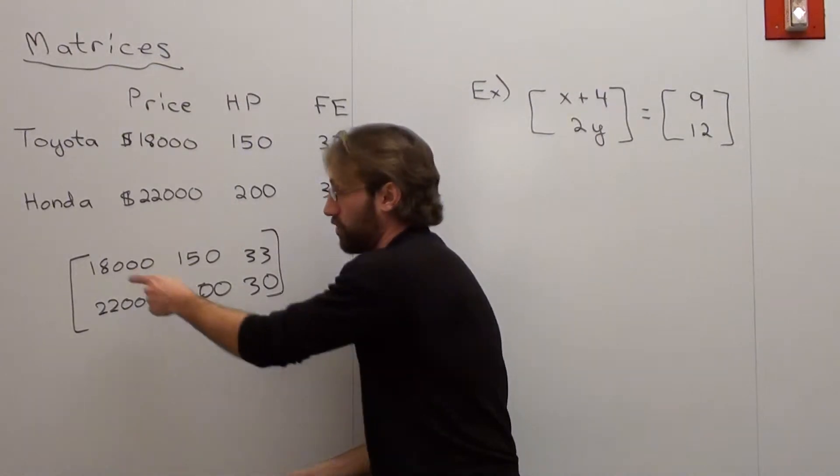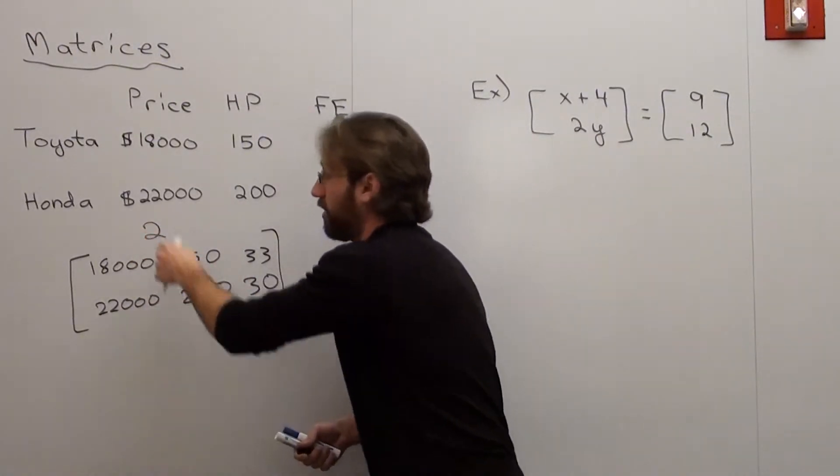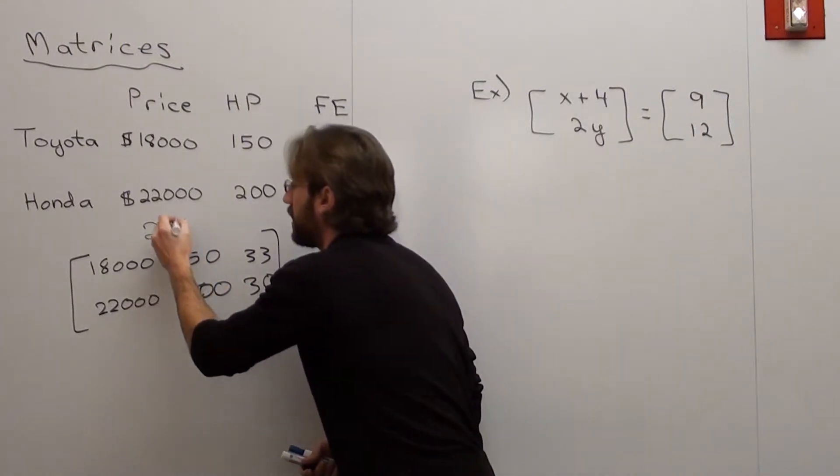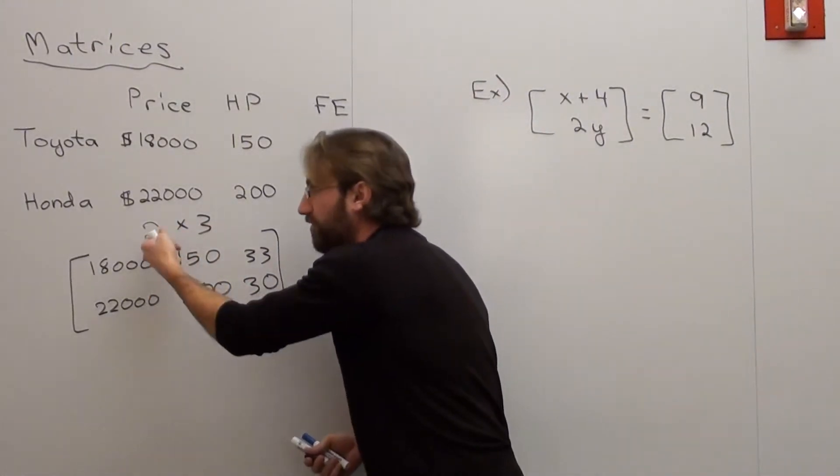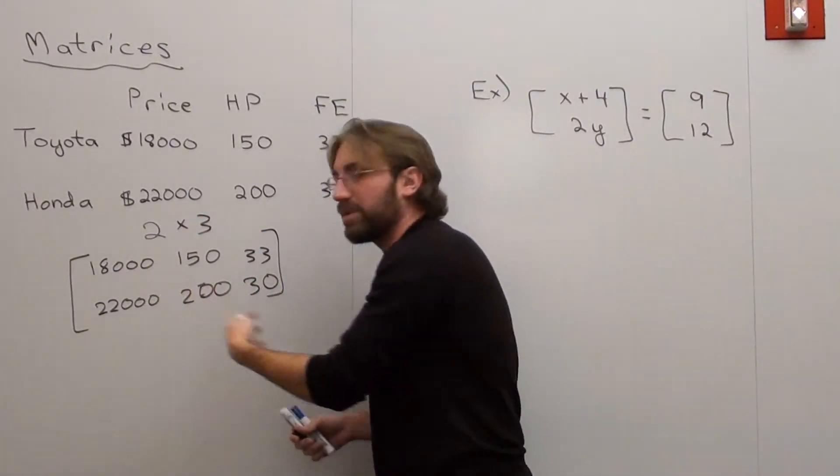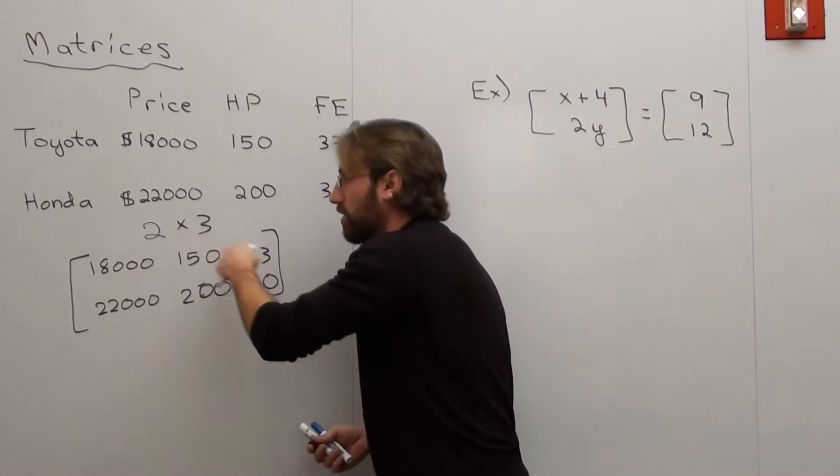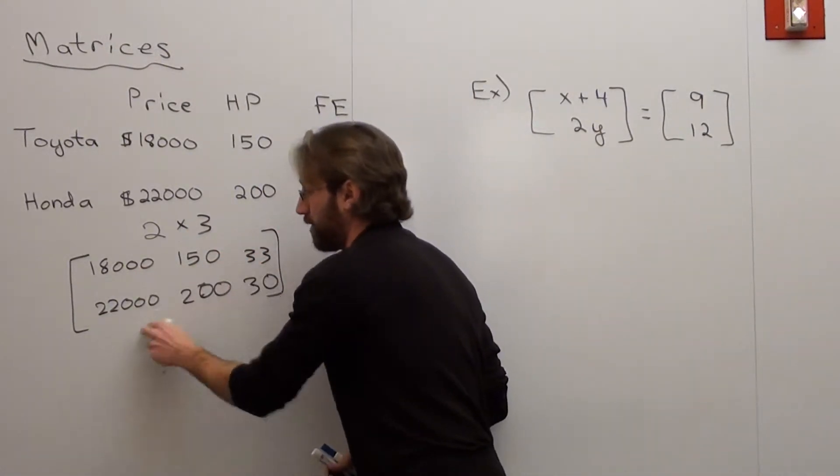So what happens is there's two different rows and there's three columns. So we call this a two by three matrix. If there were four rows, it would be four by whichever it is. If there were four rows and three columns, it would be four by three. But this is two rows, three columns. So it's a two by three matrix. Now each number inside here is called an element.